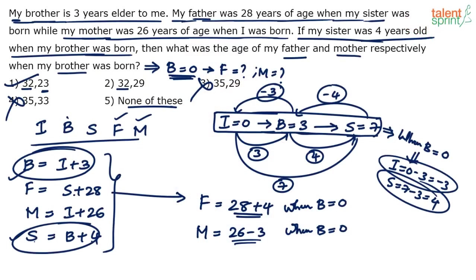You can also solve using equations directly. m = i + 26, and i = b − 3, so m = b − 3 + 26. Similarly s = b + 4. Let me show the equation-based solution using a different color so you can differentiate.